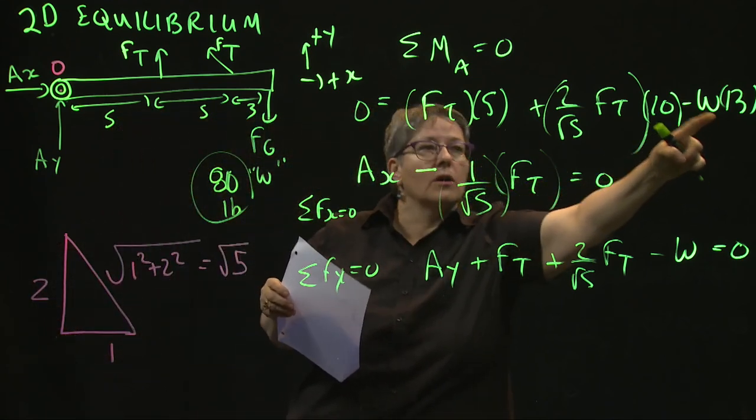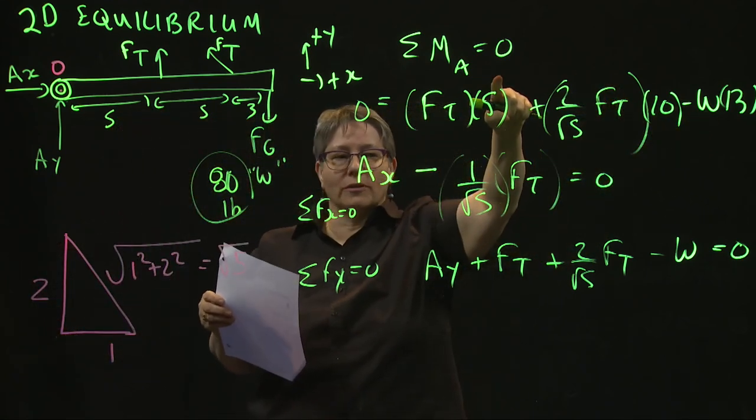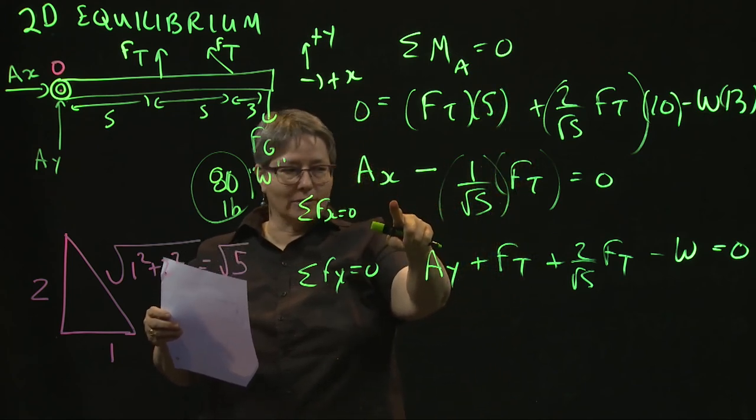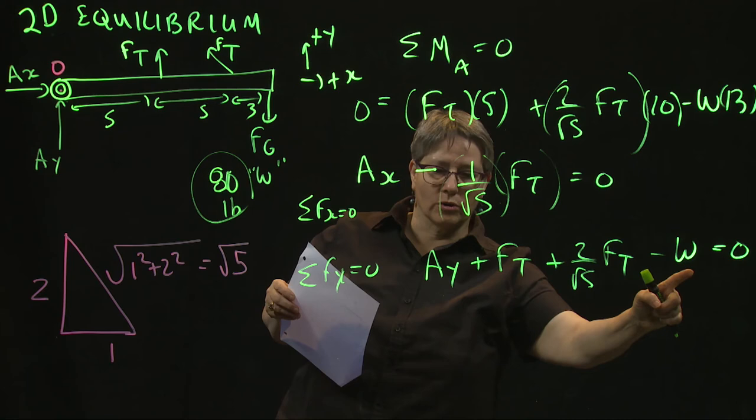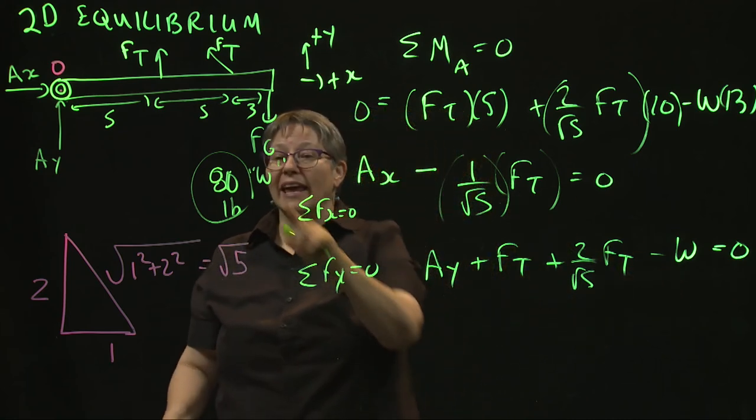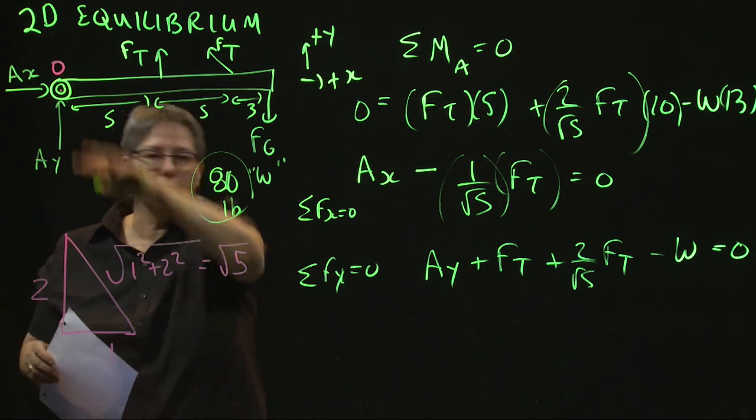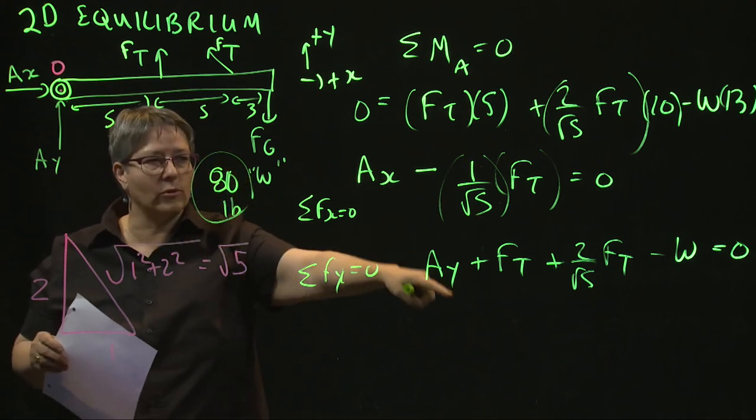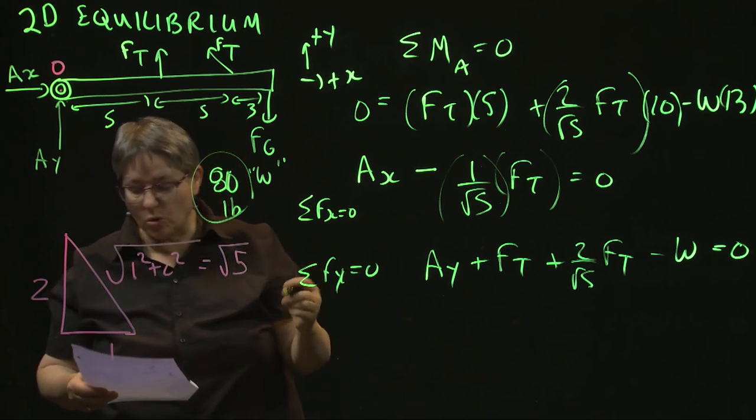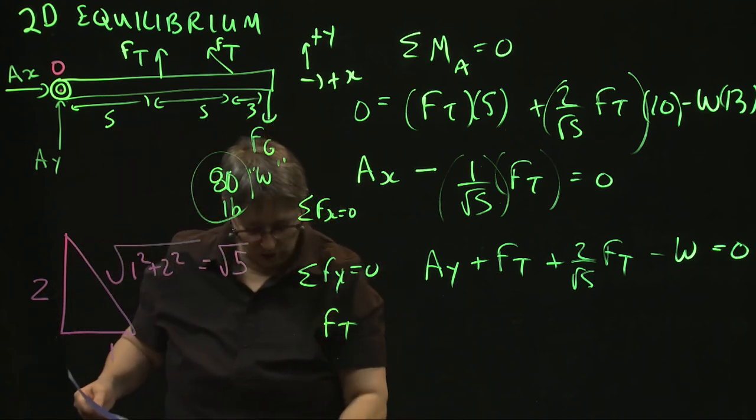If you know W, you can find your tension force. If you know your tension force, you can find Ax. If you know your tension force and W, you can find Ay. So take it by knowing this one number, and of course, all of those distances, all of those angles, out comes your values.